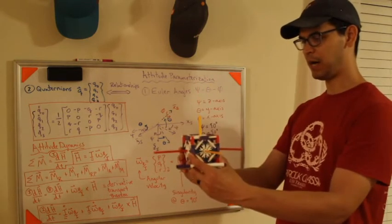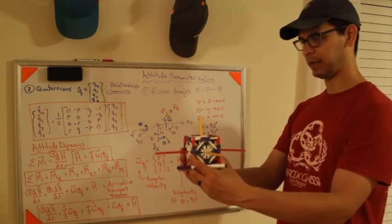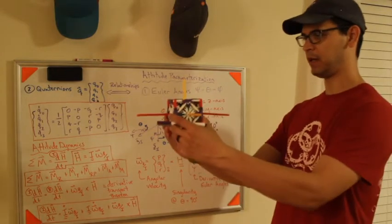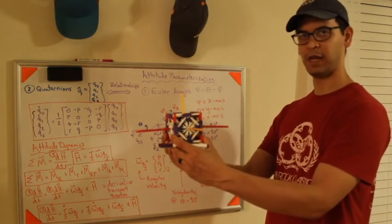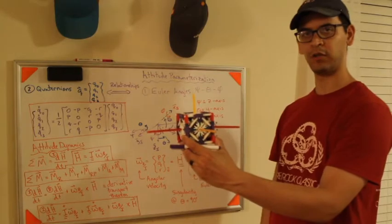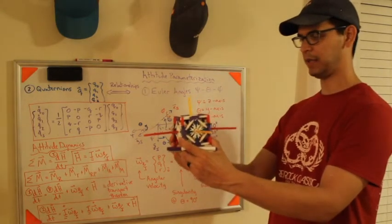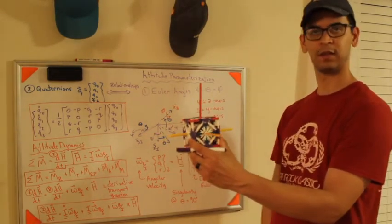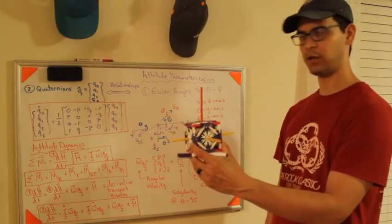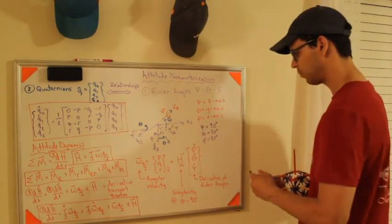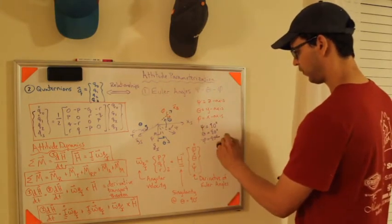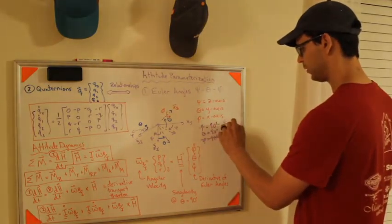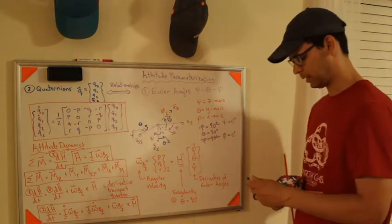Now say I'm in the body frame, and like say, say I put this behind my back, and I pull it out, and I say this is the body frame, get me to the inertial frame. I'm going to look at it and say, well that's easy, you just do this, right? And now you're at the inertial frame. But that would mean that phi was zero, psi was zero, psi was zero, and theta was 90.